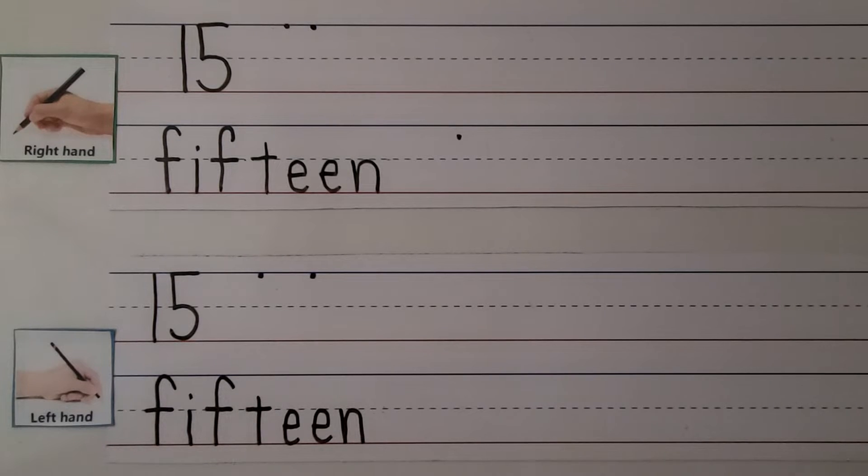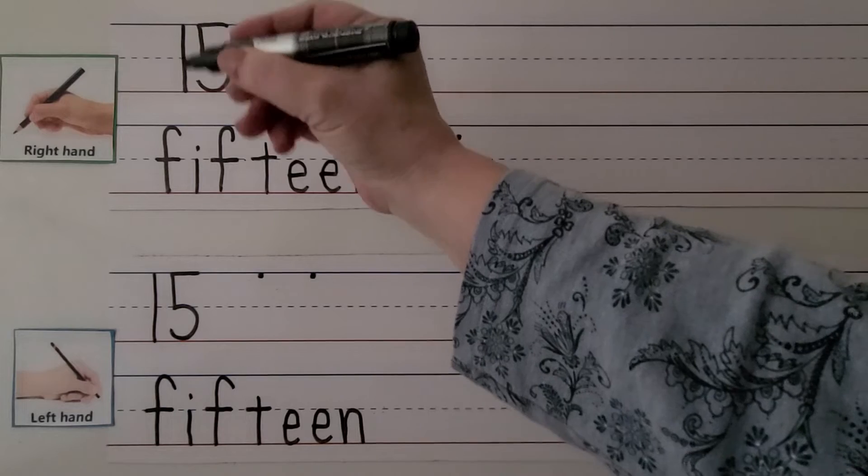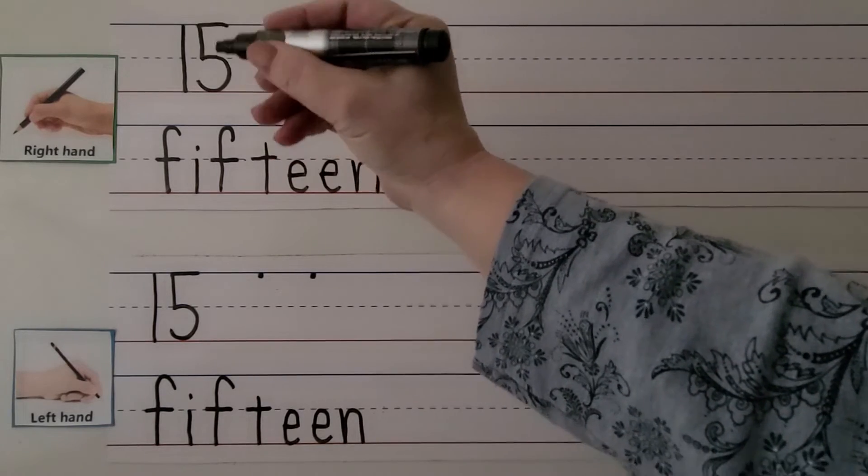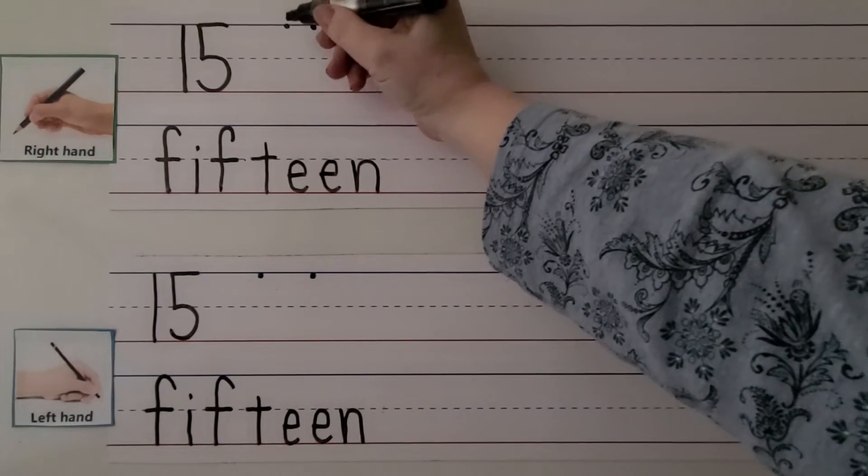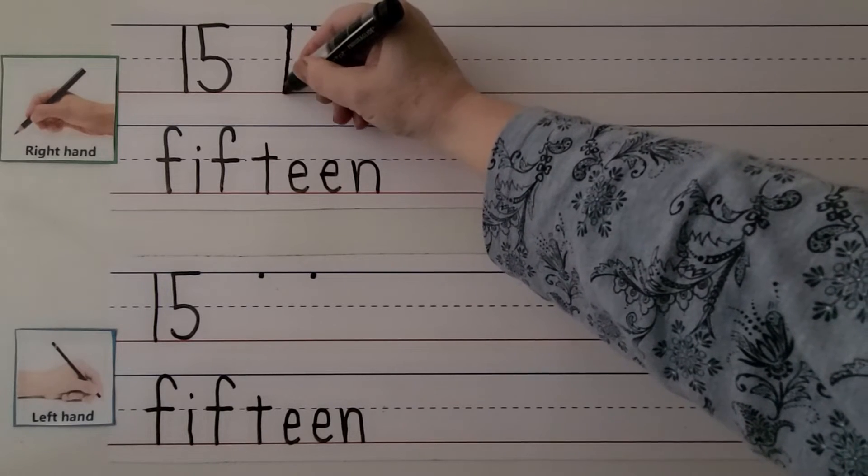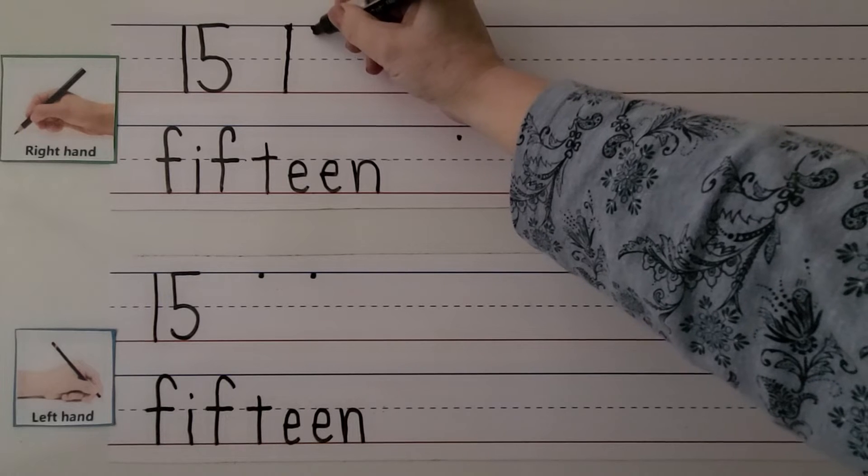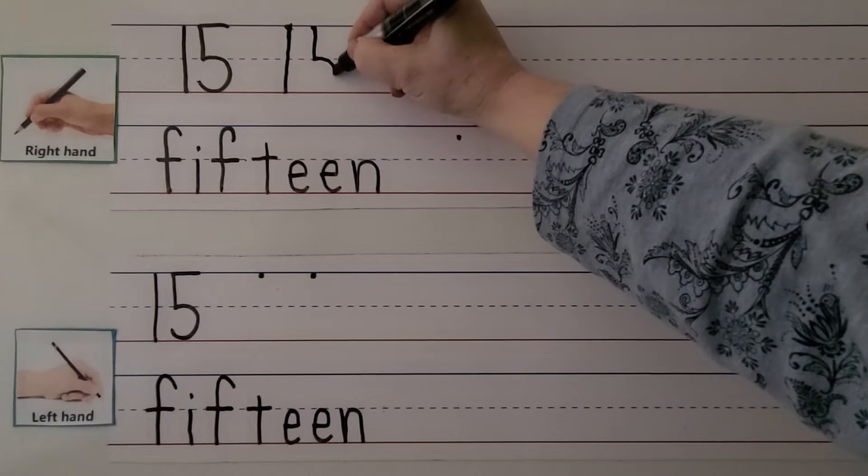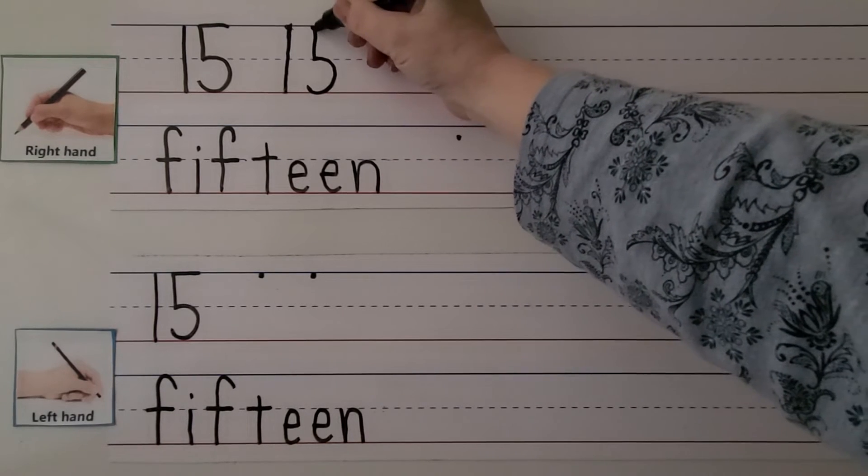We can write the number 15 with our right hand. We make a 1 and a 5. We start up here at the top line and make a 1. We start here and come straight down to make the 1. We make our 5. We come down and around. We put the top on.